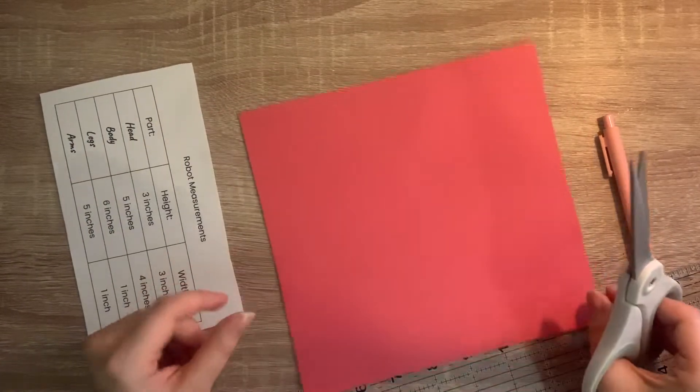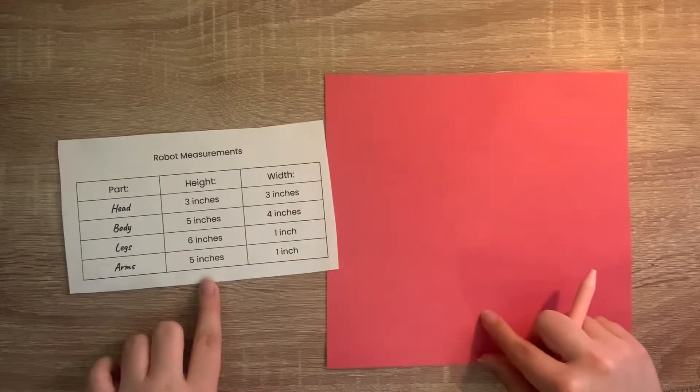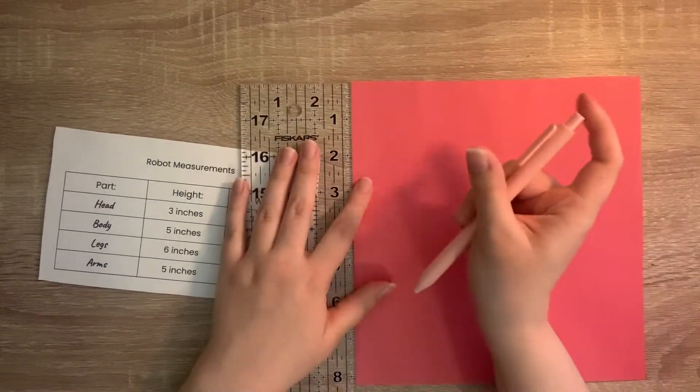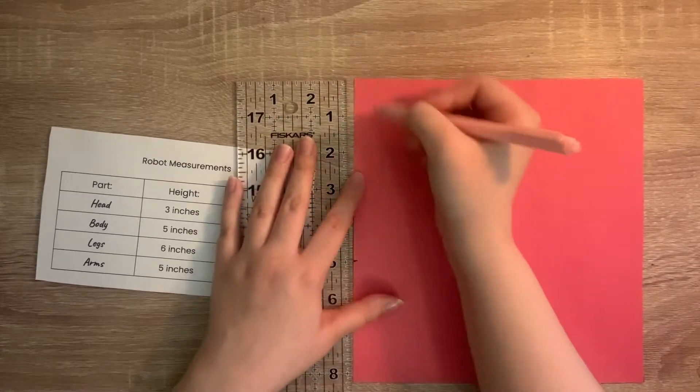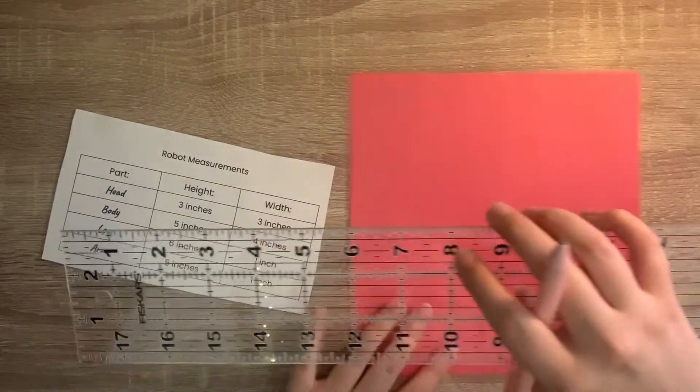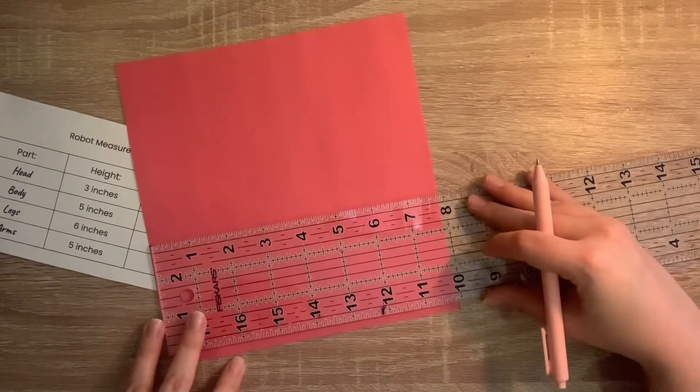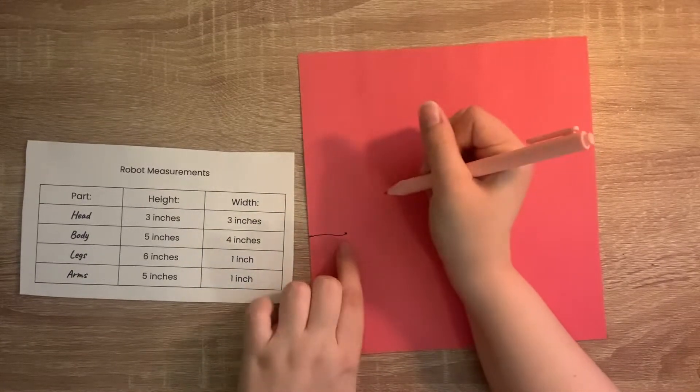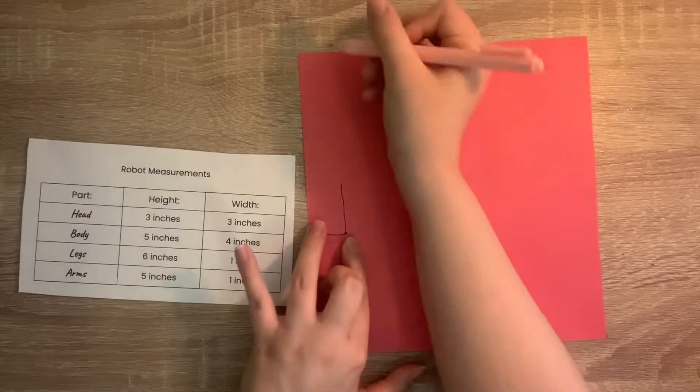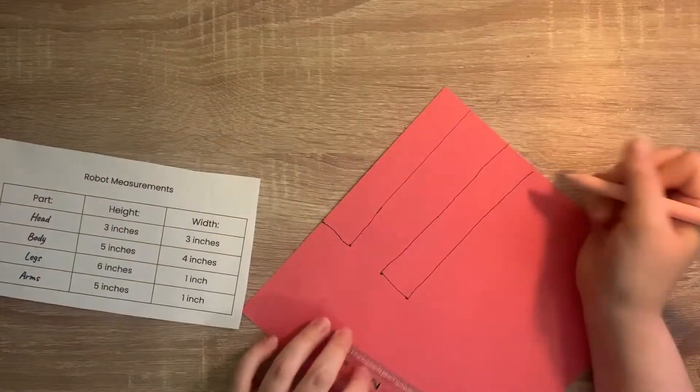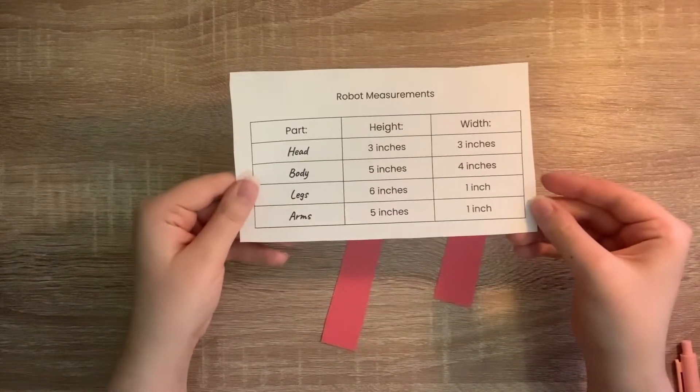Lastly, we are going to create our arms. The sheet says that the arms are 5 inches tall and 1 inch wide. So let's take our ruler and mark at 5 inches. So we know this length is how tall it's going to be. Now let's create the width. We're going to turn it this way and mark at 1 inch wide. Now we're going to connect these two marks and connect it to the top. Now we're going to do the same thing over here to create our second arm. Now let's cut these arms out. I'm going to put our measurement sheet to the side as we have created all of our pieces.